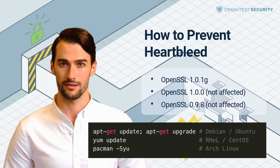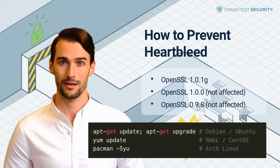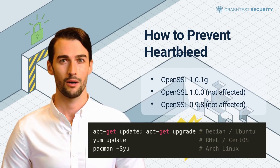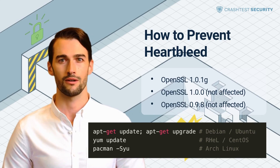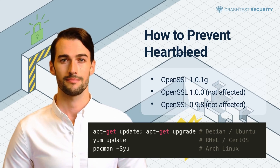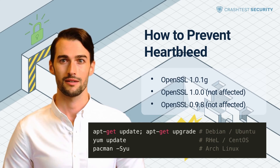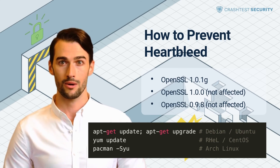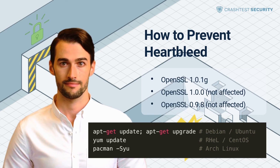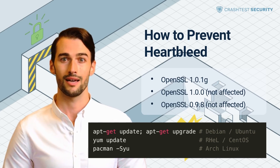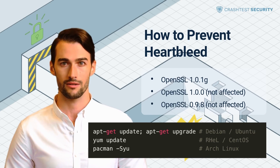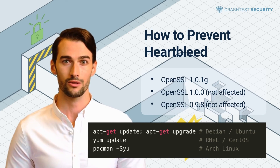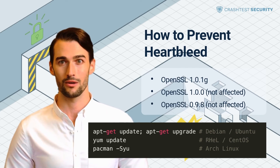To prevent the Heartbleed attack, update OpenSSL to the latest version. The following versions are known to have fixed the Heartbleed vulnerability: OpenSSL 1.0.1g is patched; OpenSSL 1.0.0 is not affected; OpenSSL 0.9.8 is not affected. Run the code shown in the video. This step is key because the risk of attacks remains if you're running vulnerable versions of OpenSSL.